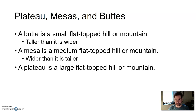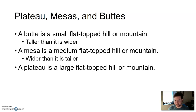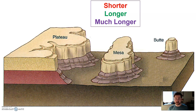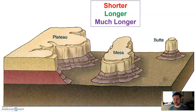Then we have a plateau, which is a large flat-topped hill or mountain — much wider than it is tall. Weathering and erosion, mostly due to water, creates these features. You can get all of them in the same area, just depending on size. They could all be formed from the same material — maybe sandstone on top and shale below, both sedimentary rocks. A lot of desert landforms are created in sedimentary rocks.